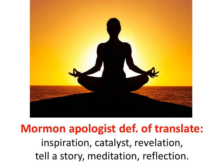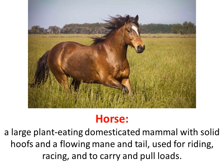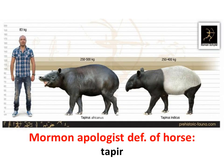Above we see a person meditating. Now here we have a horse — it seems like we're in kindergarten again. The definition of a horse is a large, plant-eating, domesticated mammal with solid hoofs and a flowing mane and tail, used for riding, racing, and to carry and pull loads. But in the Book of Mormon, the apologists don't want us to take the common definition. Since there were no horses in Book of Mormon times, Mormon apologists have redefined the word 'horse' to mean tapir. Here are two examples of tapirs — you can see the size of them compared to a man.